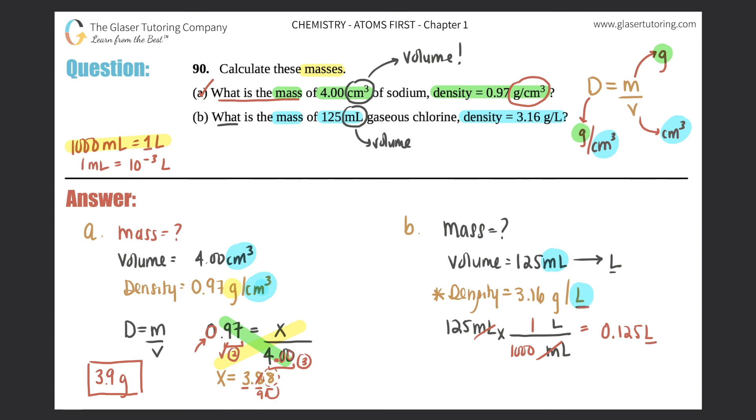Density equals mass divided by volume. 3.16 equals x over 0.125. Cross multiplication. This will equal this, because remember, the 3.16 is really over 1. So x equals 3.16 times 0.125. You get 0.395.